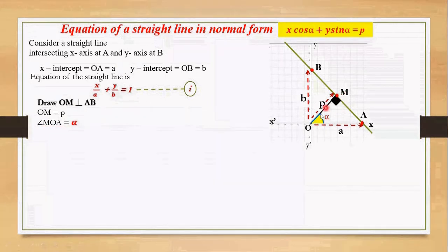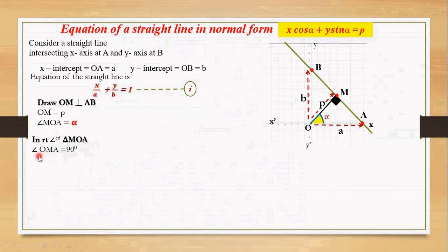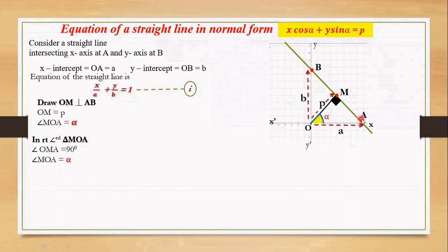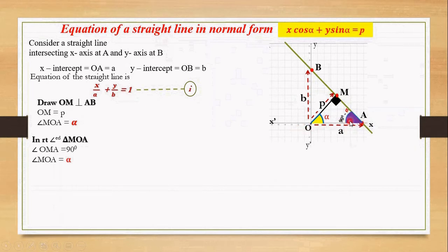Now we have a right angle triangle MOA. In this triangle, angle OMA equals to 90 degrees and angle MOA equals to alpha. Since MOA is a right angle triangle, angles MOA and MAO are complementary. So angle MAO equals to 90 degrees minus alpha.